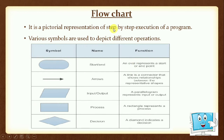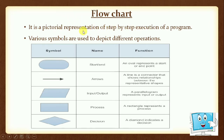The next topic is the flowchart. 'Chart' you know — it is a picture or graphic form. 'Flow' means the flow of execution. So a flowchart is the pictorial representation of the step-by-step execution of a program. If the steps are shown in picture form, then it is your flowchart. There are some symbols that we use to create a flowchart.